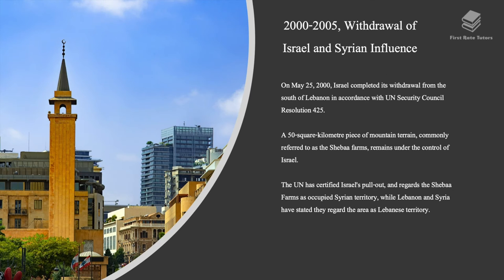Between the year 2000 and 2005, there was a withdrawal of Israel and of Syrian influence. On May 25th, Israel completed its withdrawal from the south of Lebanon in accordance with UN Security Council Resolution 425. A 50 square kilometer piece of mountain terrain, commonly referred to as the Sheba Farms, remains under the control of Israel. The UN certified Israel's pullout and regarded the Sheba Farms as occupied Syrian territory, while Lebanon and Syria stated they regard the area as Lebanese territory.